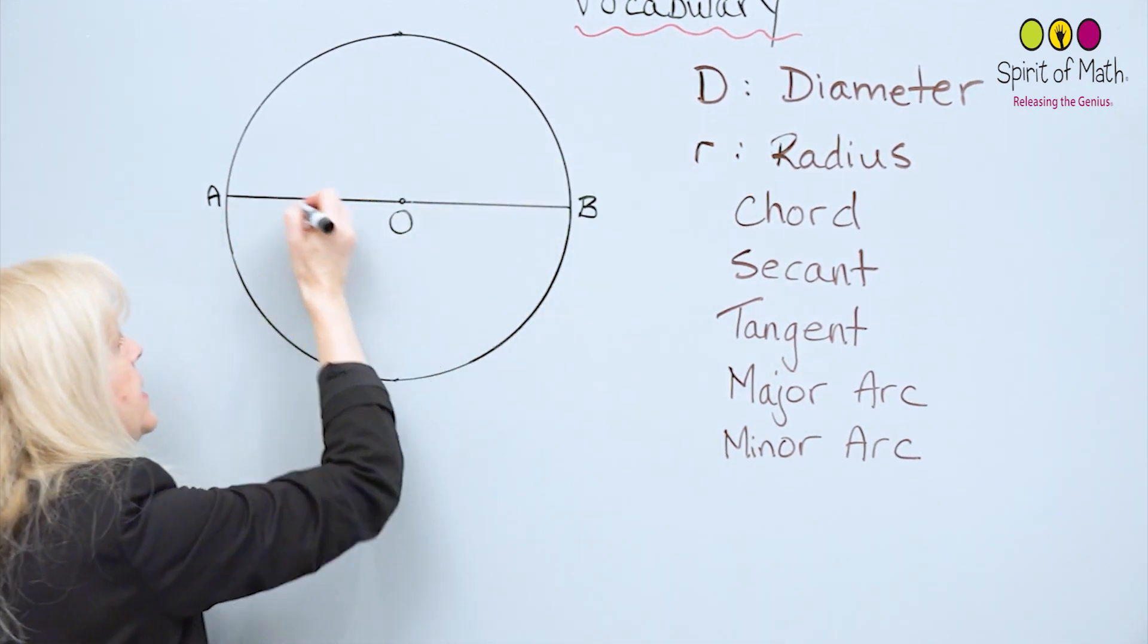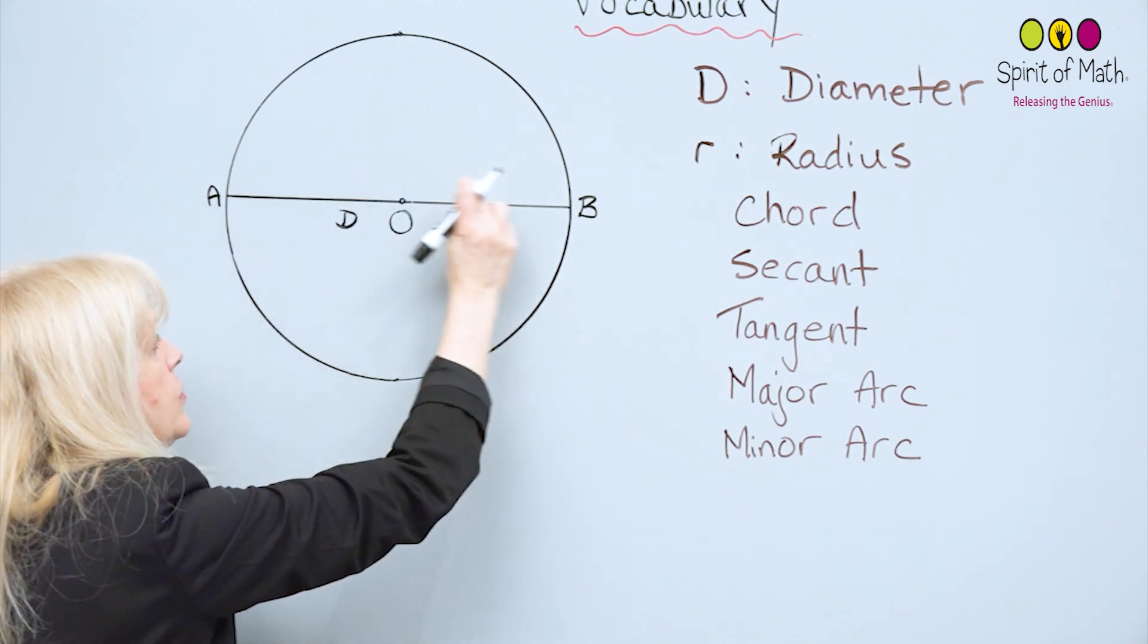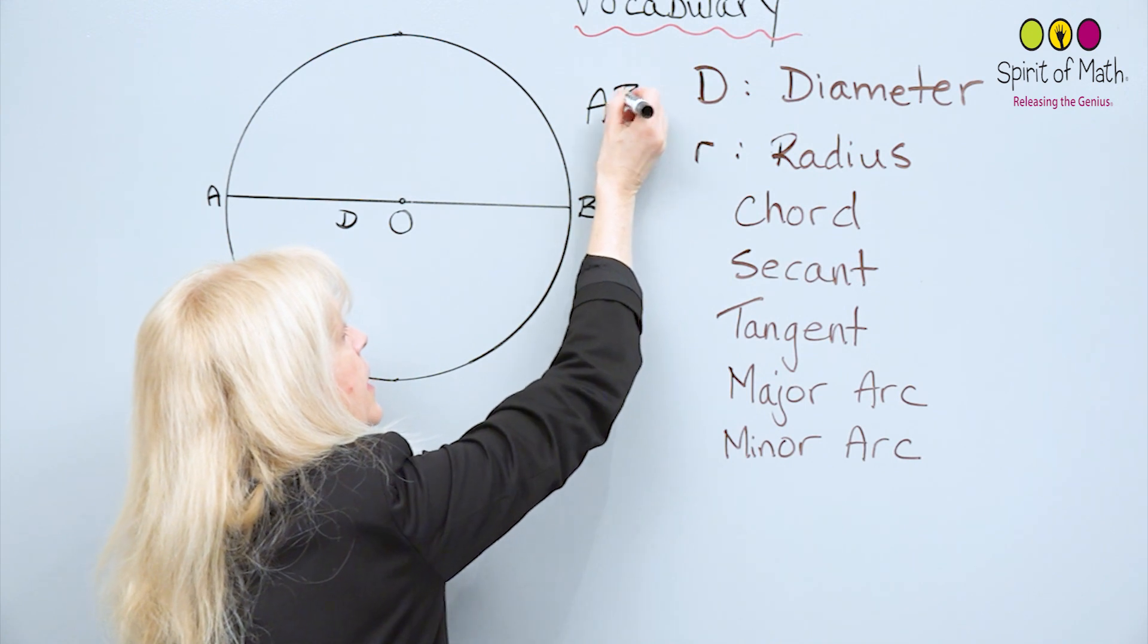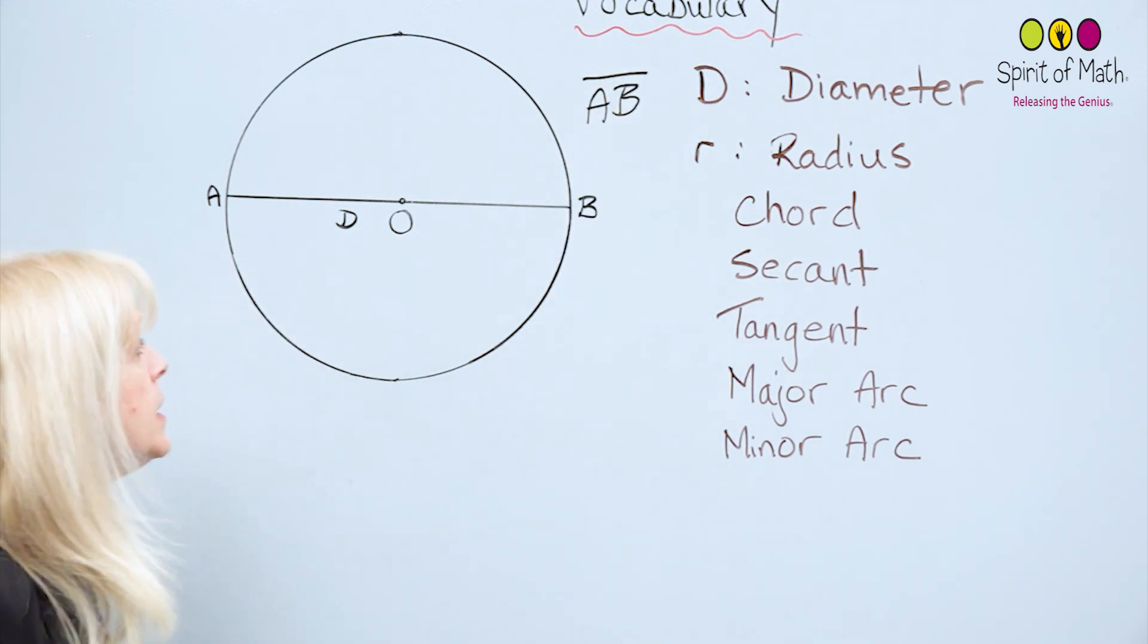So in this case, D is this whole diameter here, that's the length, and I'm also going to indicate that with AB, length AB.